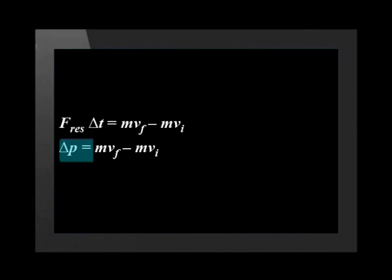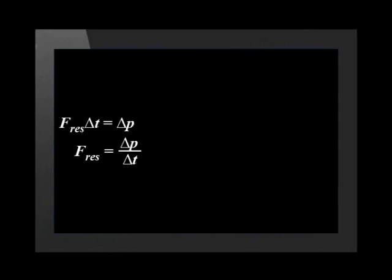Now remember, change in momentum Δp equals mass times final velocity minus mass times initial velocity. So we find that resultant force times change in time equals change in momentum. We can rearrange it to resultant force equals change in momentum divided by change in time. Now let's look at a few examples of this relationship.